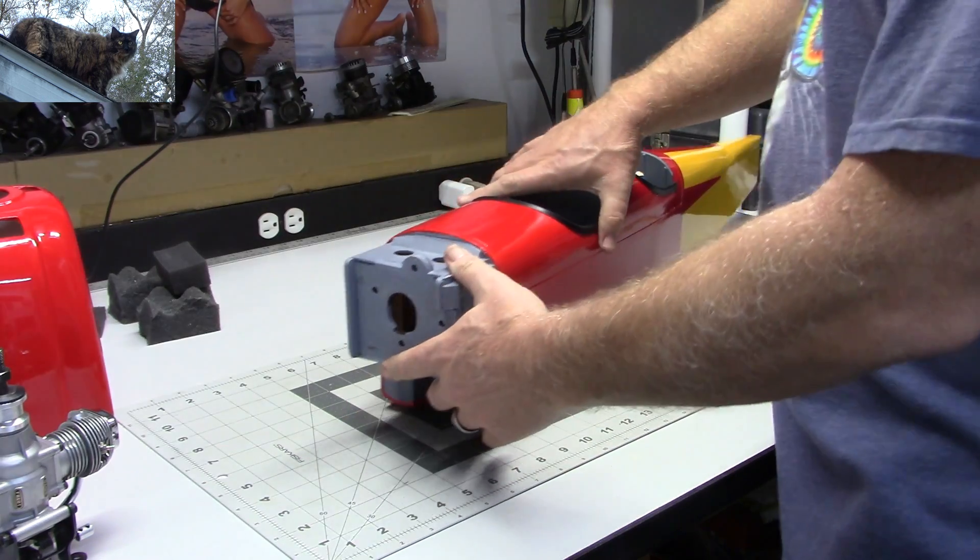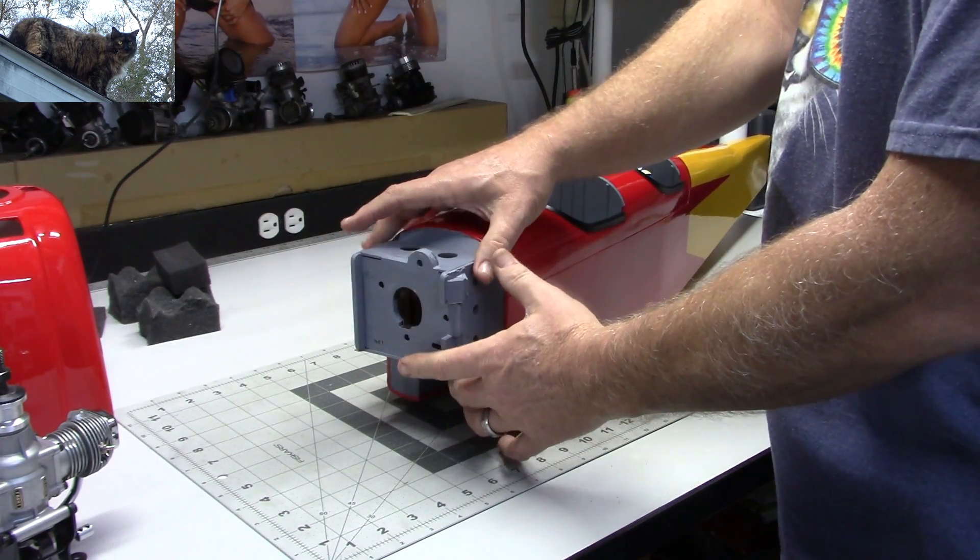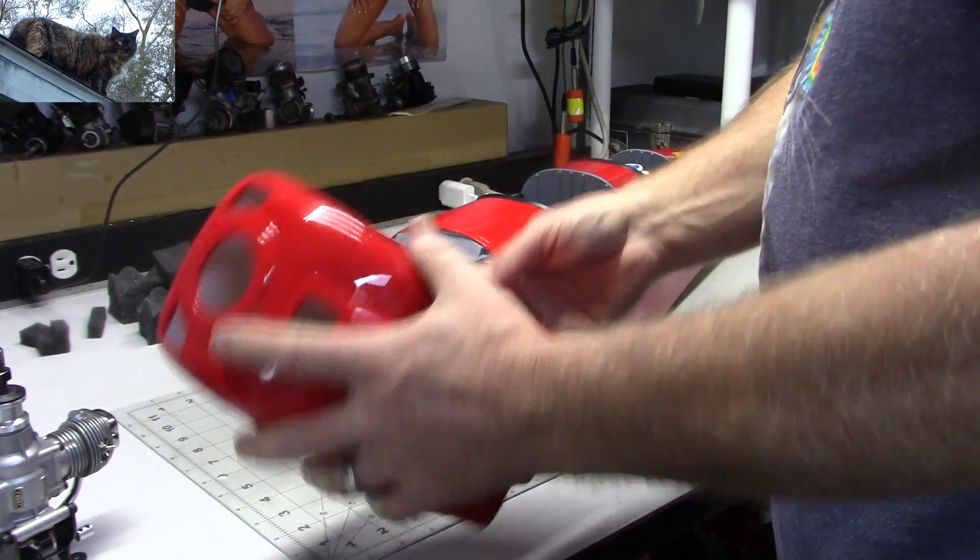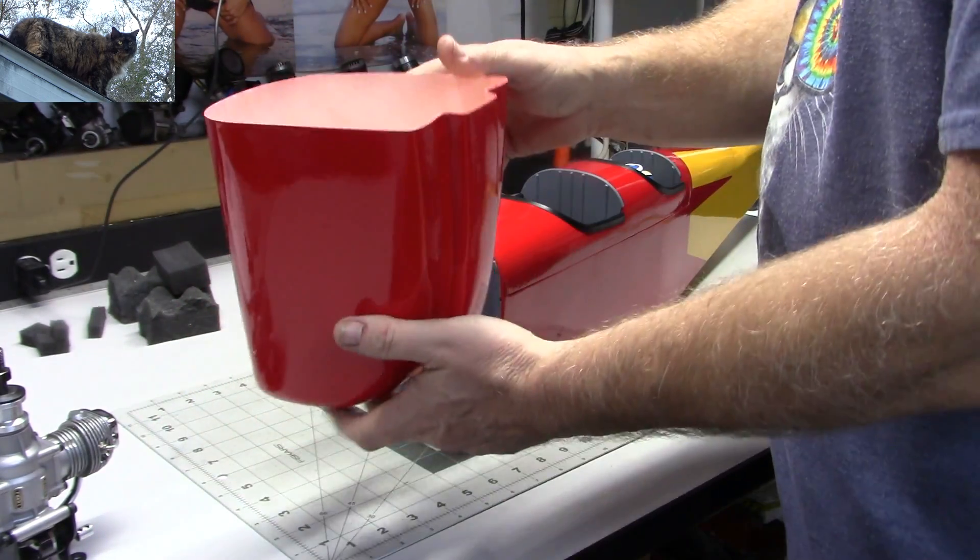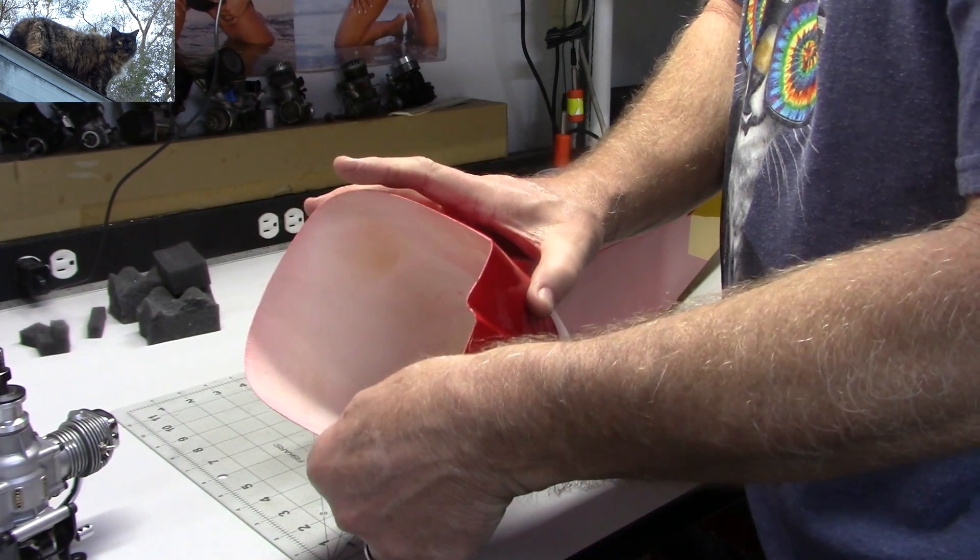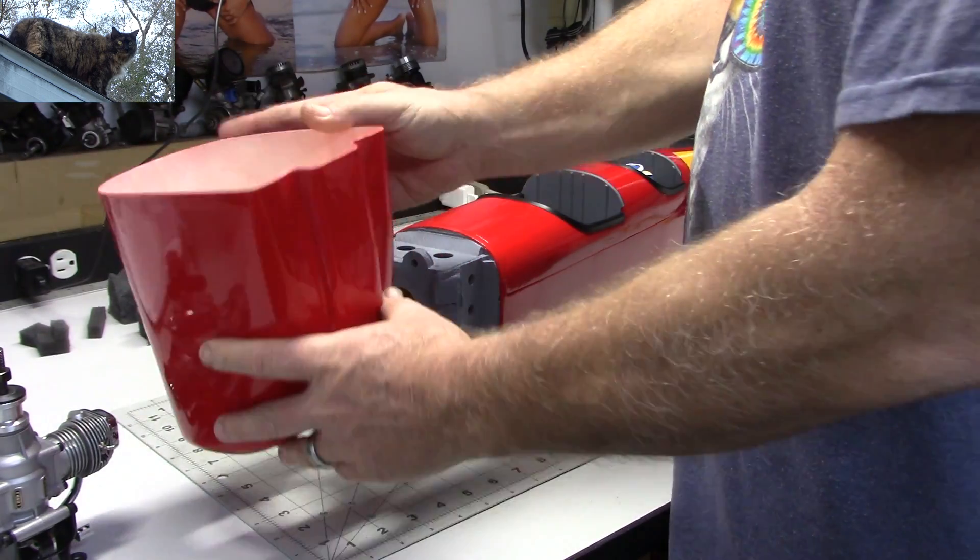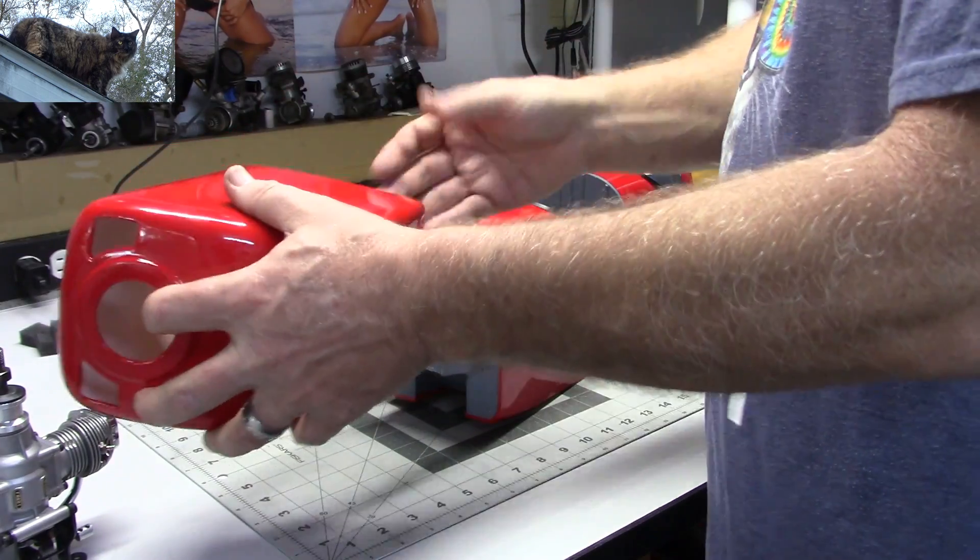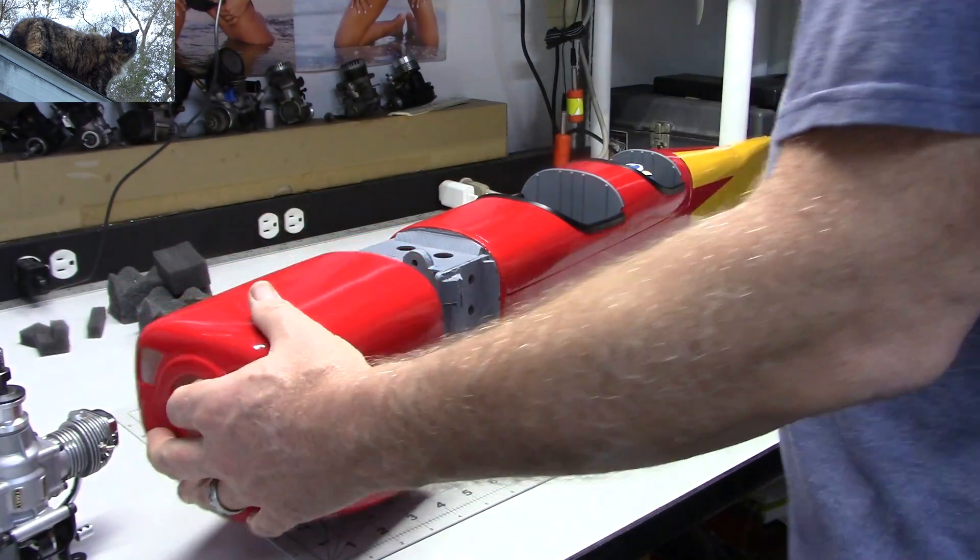So I started thinking about fitment issues and if I was actually going to have to modify the front end at all. And I've also got this cowling here. Now the cowling that came with this kit is incredible. It is a fiberglass cowl that's immaculately painted. So it's kind of unfortunate because I'm getting all kinds of fingerprints and stuff on it, but that's just what's going to have to happen.